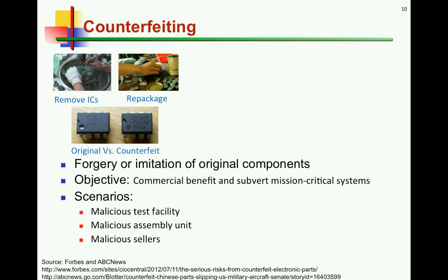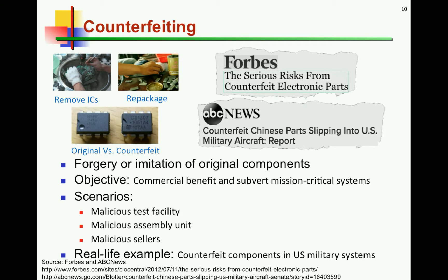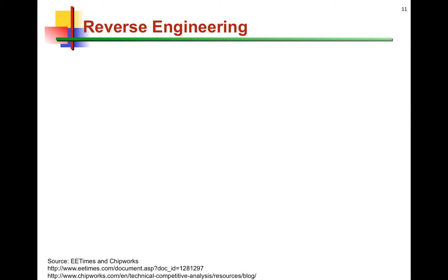The most imminent concern is the financial loss associated with counterfeit chips, which can happen through malicious test facilities, assembly units, or third-party sellers — all an end result of the distributed IC supply chain. About a decade ago in the US, counterfeit Cisco network components were detected in certain applications. Because these were going to be military applications, the FBI had to get involved — their concern was whether these counterfeit chips had backdoors in them.